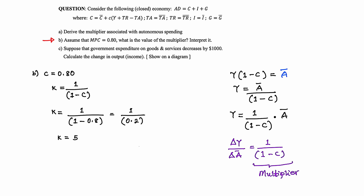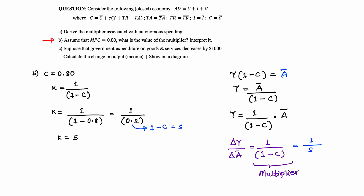An important note: this 0.2 is gotten by 1 minus C, and this 0.2 is nothing but small letter S, the marginal propensity to save, or MPS. So we can also write the multiplier as 1 over S. In this simple case it can be represented as such.